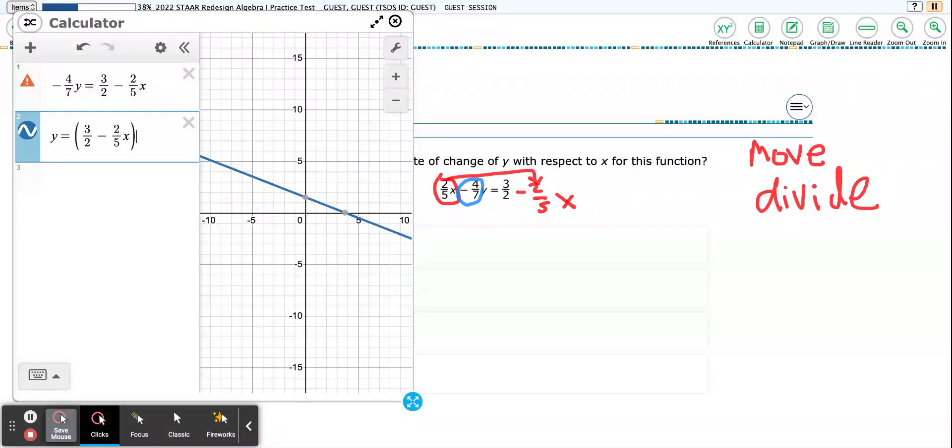I'm going to close those parentheses and then divide that whole side by negative 4 over 7. That kind of gives me this line right here. So that tells me this is a positive line. The very first thing I can do is go over here and go, okay, which ones are positive.